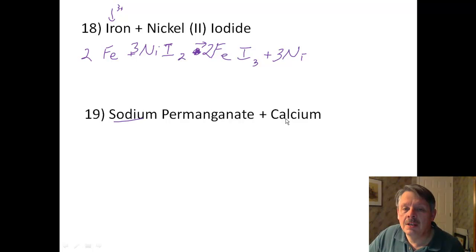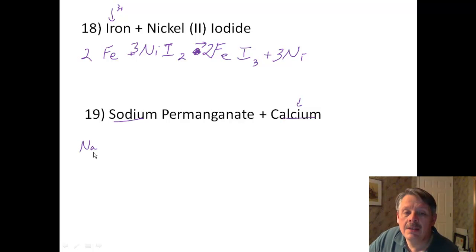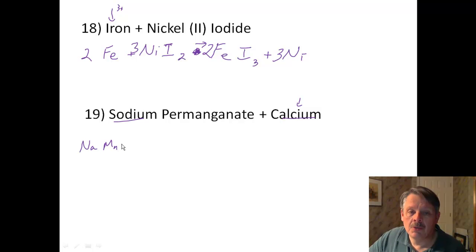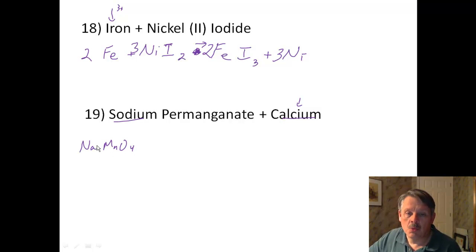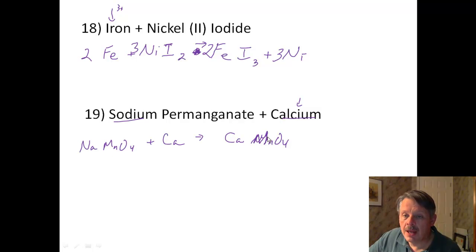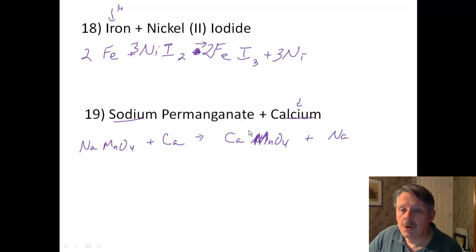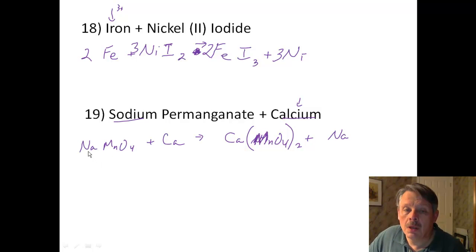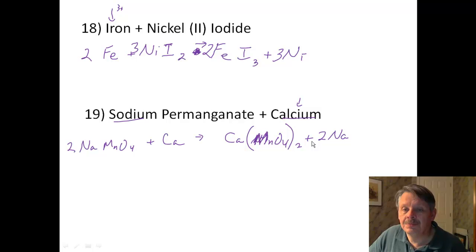Number 19: sodium permanganate and calcium. Calcium is higher on the activity series, so it replaces sodium. Permanganate is MnO₄ with a 1− charge; sodium is 1+, so NaMnO₄. Calcium has a 2+ charge and MnO₄ is 1−, so calcium permanganate is Ca(MnO₄)₂. That means I need a 2 in front of sodium permanganate and a 2 in front of sodium on the product side. That should be balanced.